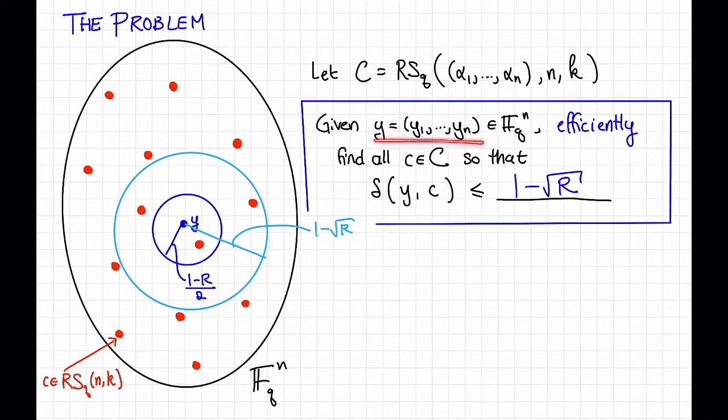That is, given y, this center here, let's look at this ball of radius 1 minus root r in relative Hamming distance, and we want to efficiently return all of these points.